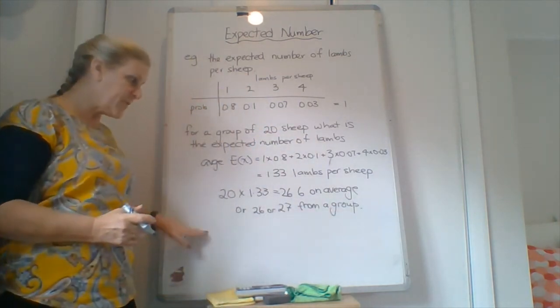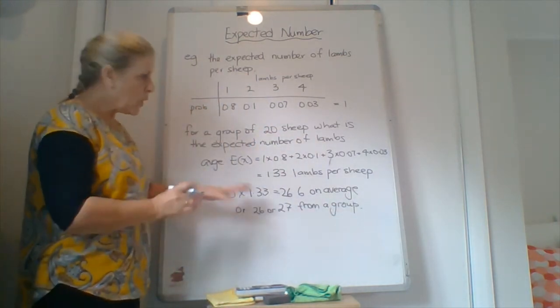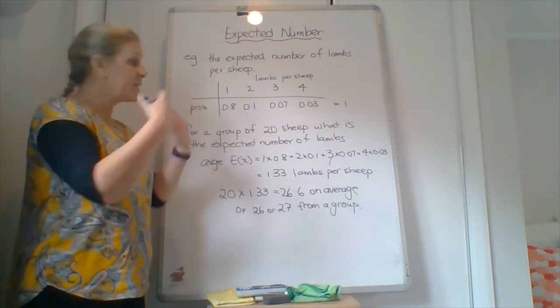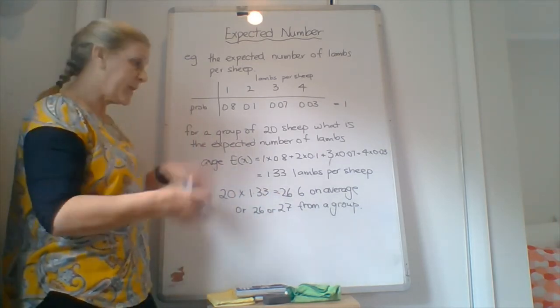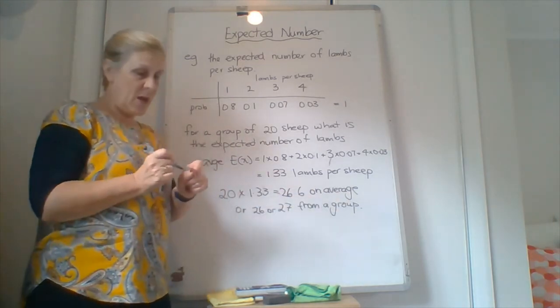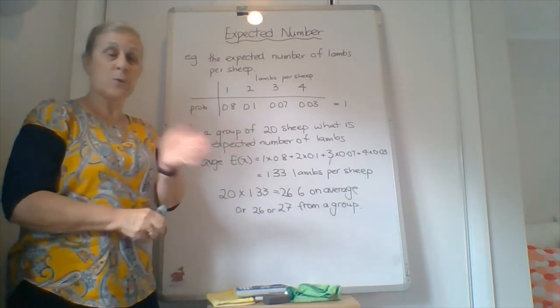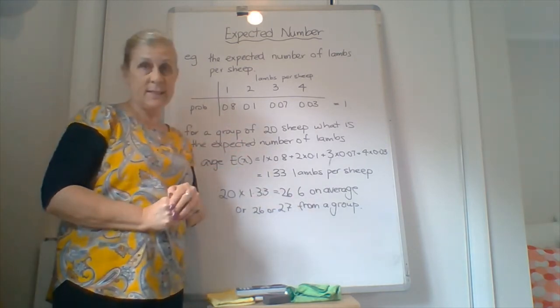Alright, so you need to read the question to find out whether they're talking about a specific group, or whether they're talking about if we continue to take 20 sheep, how many would we expect? Then we'd expect, if we averaged out all our groups of 20, 26.6. Okay?